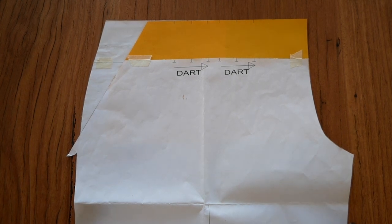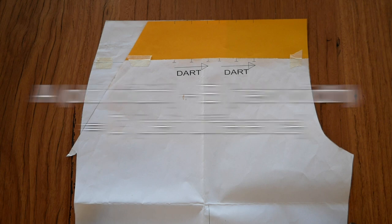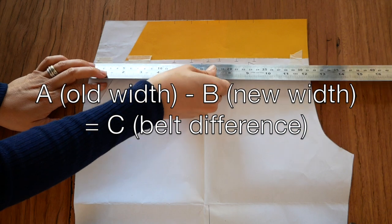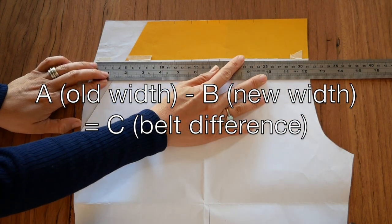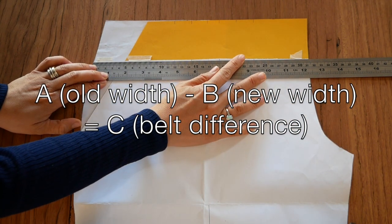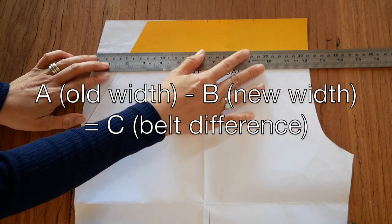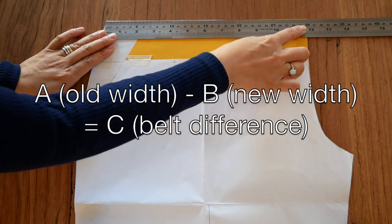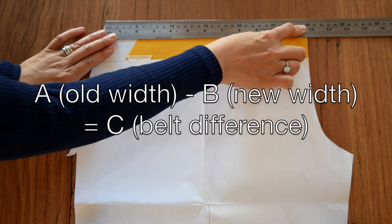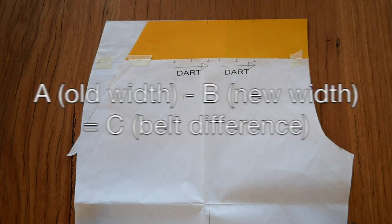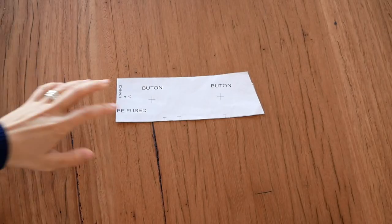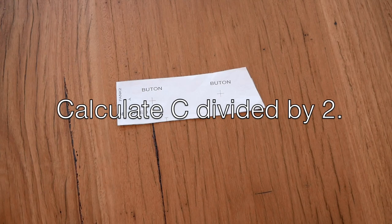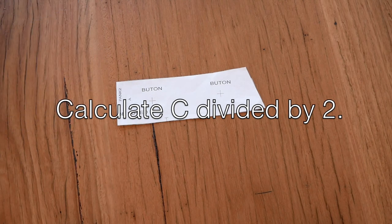Let's figure out how much we need to decrease the belt by to match the higher waistline. Measure the original waistline width and the new waistline width, then calculate the difference between the two. A (the old width) minus B (the new width) gives us C, which is the measurement we want, the belt difference. The belt pattern piece is cut on the fold, so we'll need to divide C by 2 before adjusting its width.